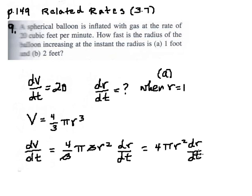Now let's just substitute dV/dt is equal to 20 and let's substitute r is equal to 1 for part a.